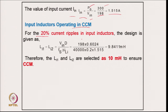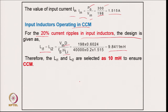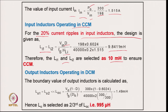For 20 percent current ripple in CCM, the input inductor is calculated from the on-period relation, giving 9.841 mH. Therefore L_d1 and L_d2 are selected as 10 mH to ensure continuous conduction mode over a wide operating range of input voltage and load.